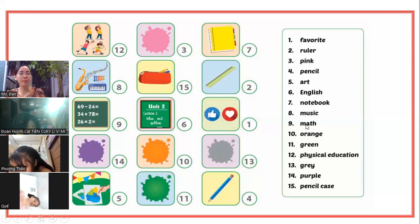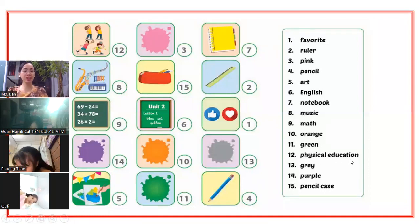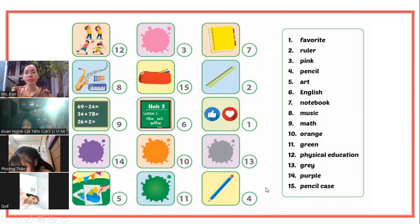Số 9: Math - môn toán. Số 10: Orange - màu cam. 11: Green - màu xanh lá. 12: Physical Education - môn thể dục. 13: Gray - màu xám. 14: Purple - màu tím. 15: Pencil case - hộp bút. Có ai chưa biết làm không?